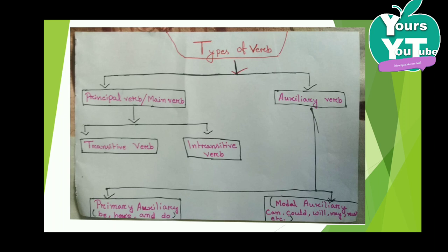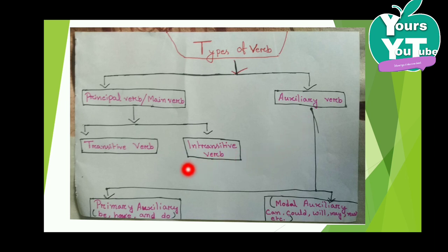I have prepared a chart of different types of verbs. The verb is mainly divided into the main verb and the auxiliary verb. The main verb is the principal verb, and the auxiliary verb is the helping verb. The primary auxiliary includes be, have, and do.